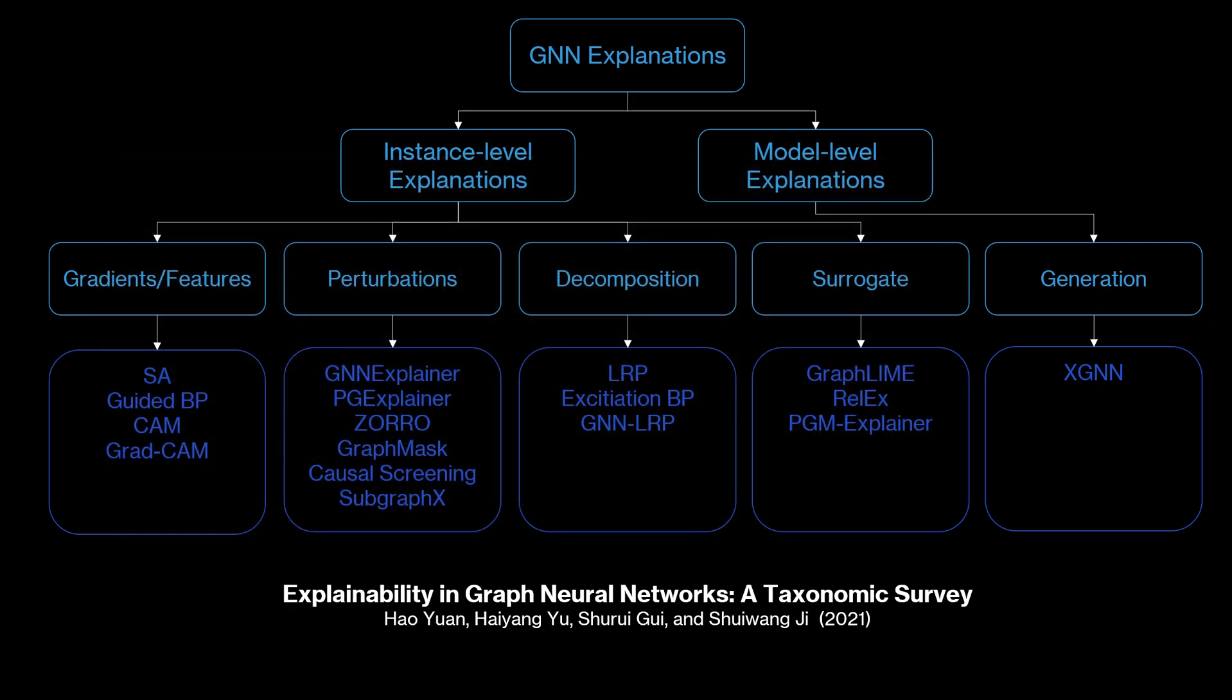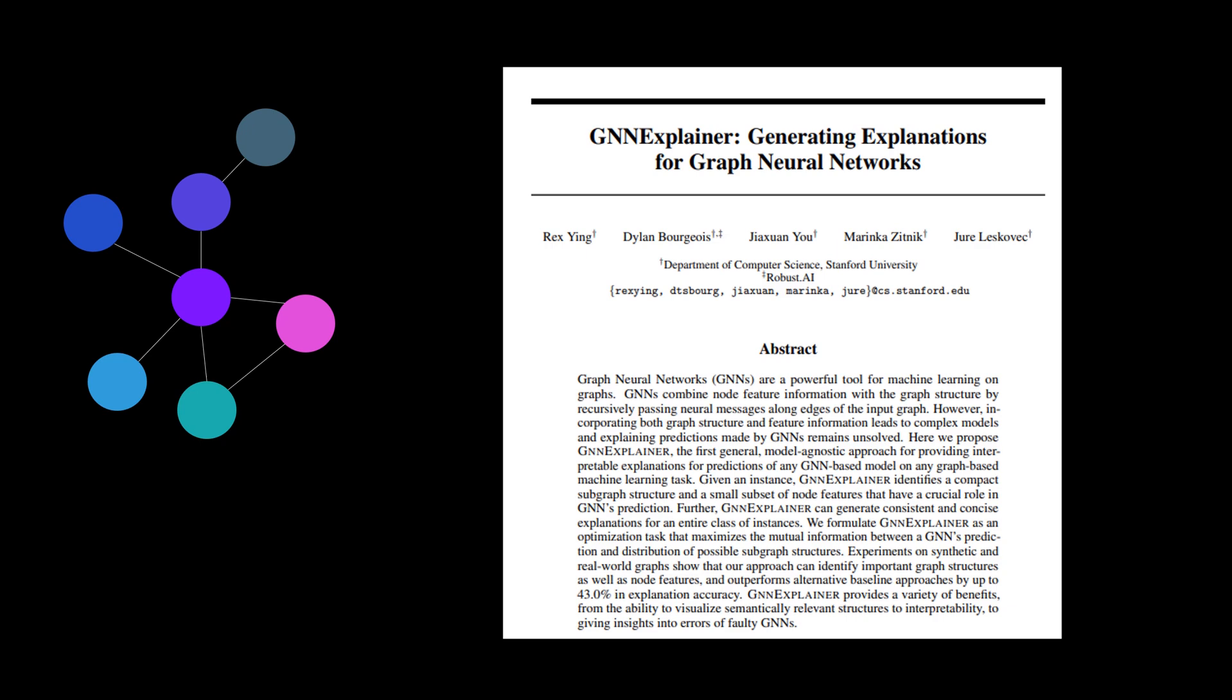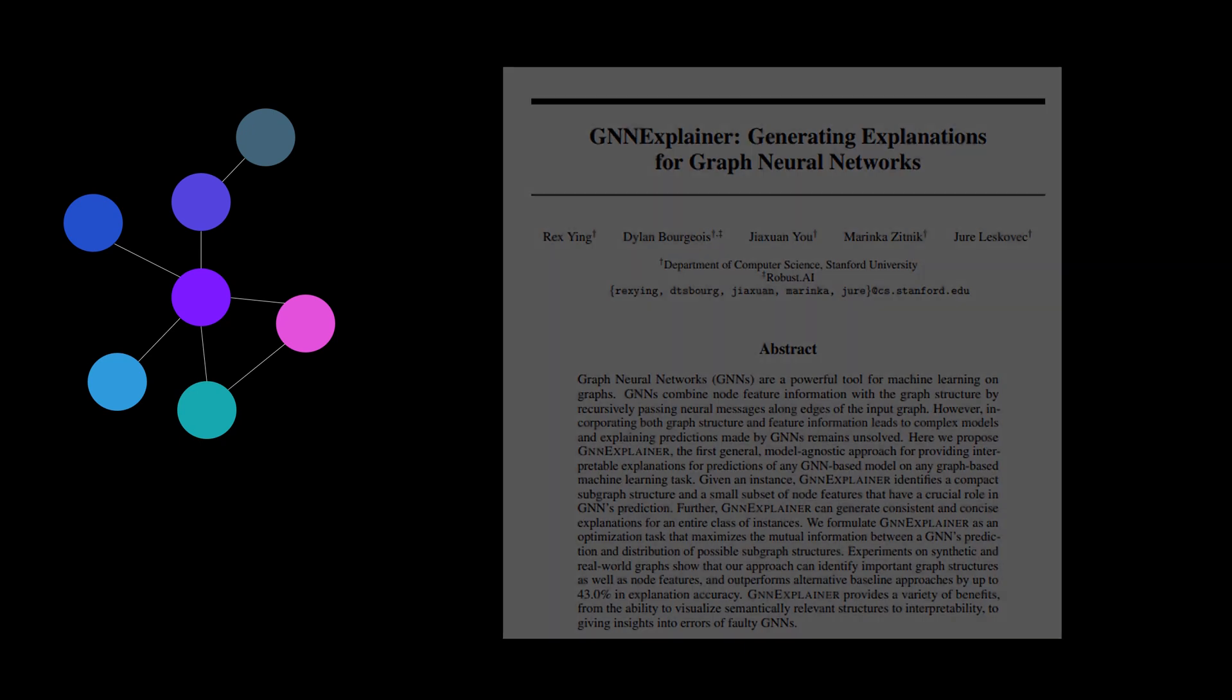So I hope that this gave you a quick overview on some of the available methods. Of course this is not an exhaustive summary as new methods are published all the time. Worth to mention are also attention based models where the attention weights can be utilized for explanations. Let's now dive into one specific method which is GNN explainer. It was published in 2019 by these researchers. Before we talk about the mathematical details I want to give you a high level idea of how the method works.